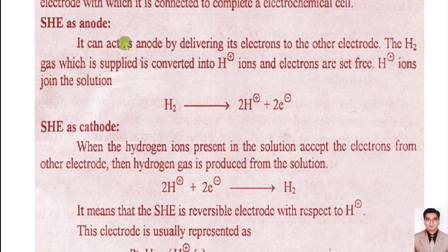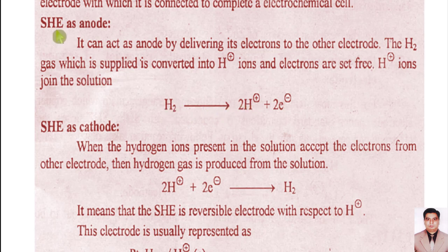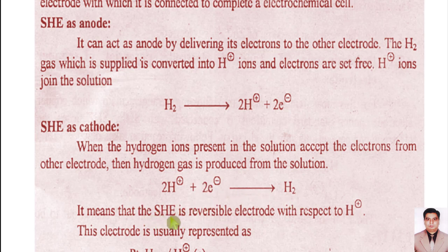If the connecting metal has a tendency to lose electrons, then SHE will act as cathode. When hydrogen gas supplied to SHE loses electrons and is converted into hydrogen ions, we say that SHE is acting as anode. On the other hand, if SHE is gaining electrons from the other electrode, then the hydrogen ions already present will receive two electrons and produce hydrogen gas. So the standard hydrogen electrode is a reversible electrode with respect to hydrogen ions.